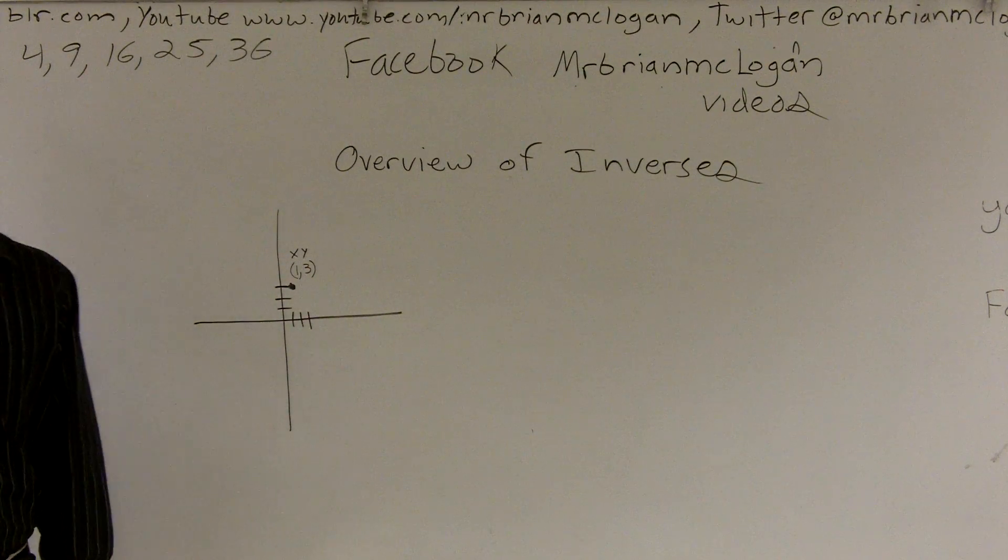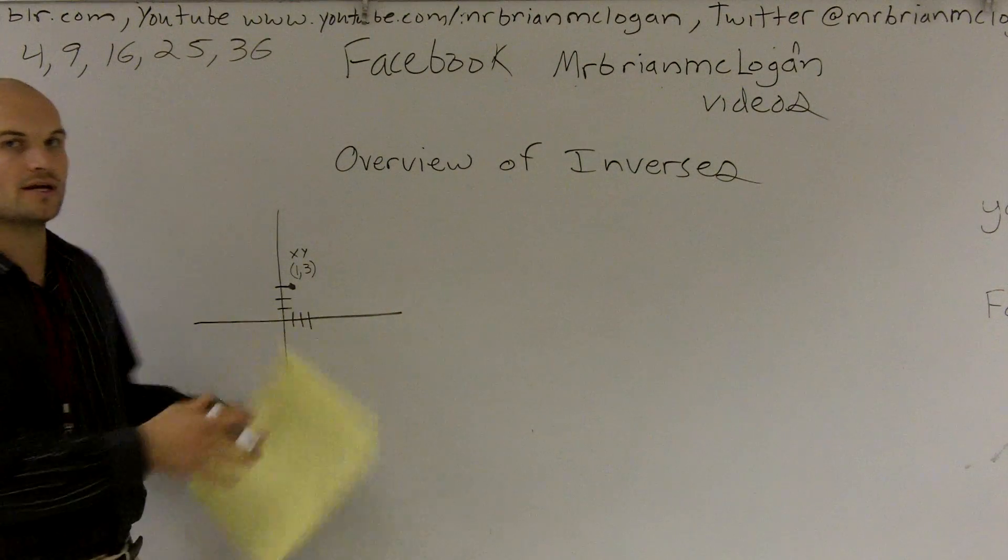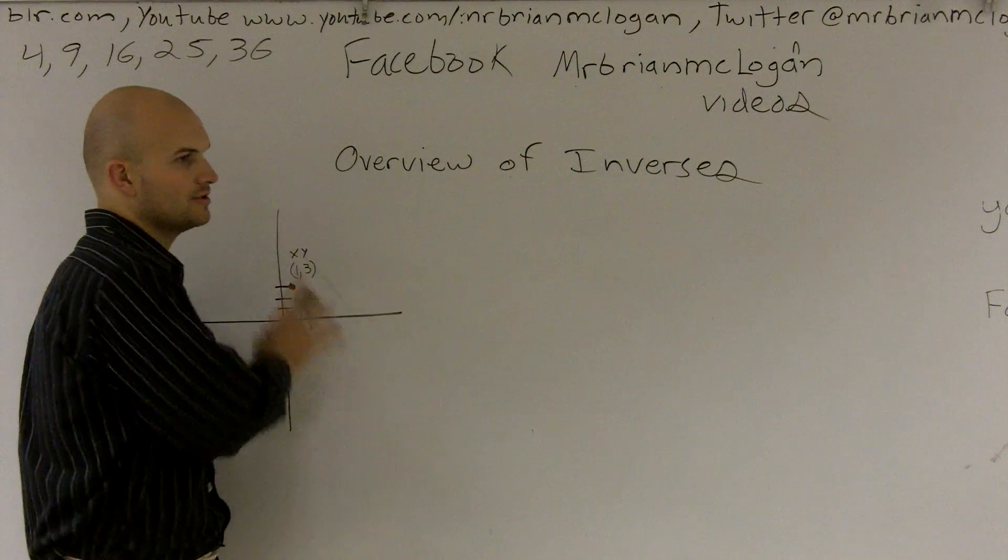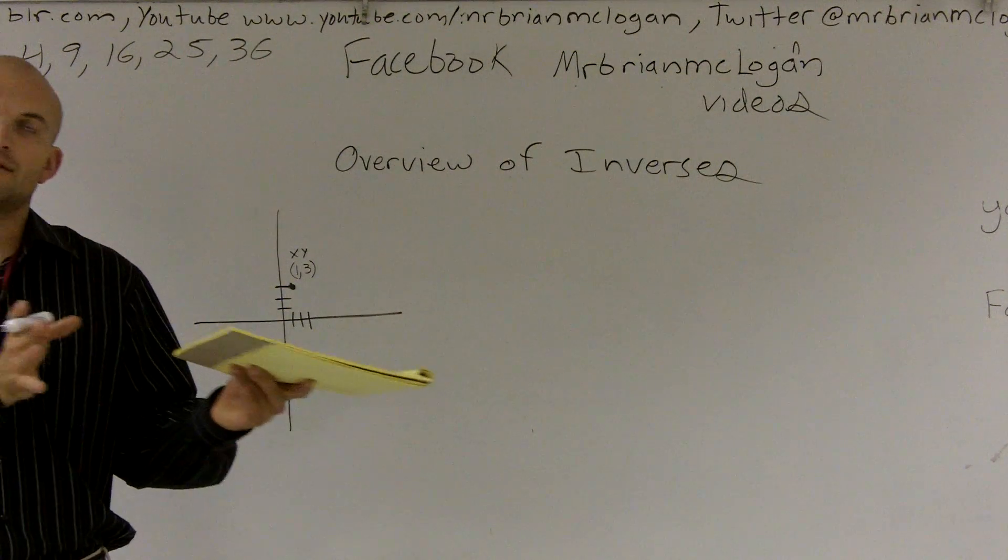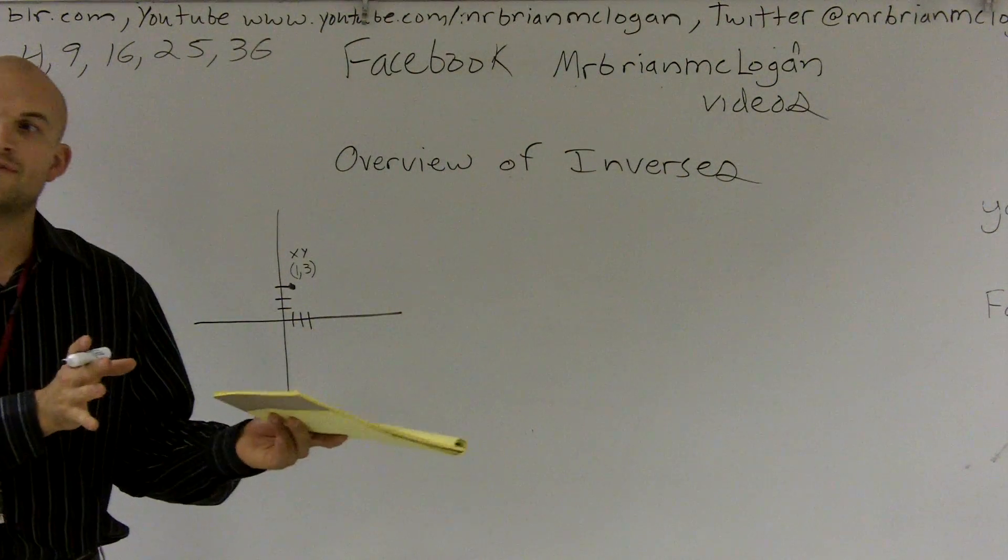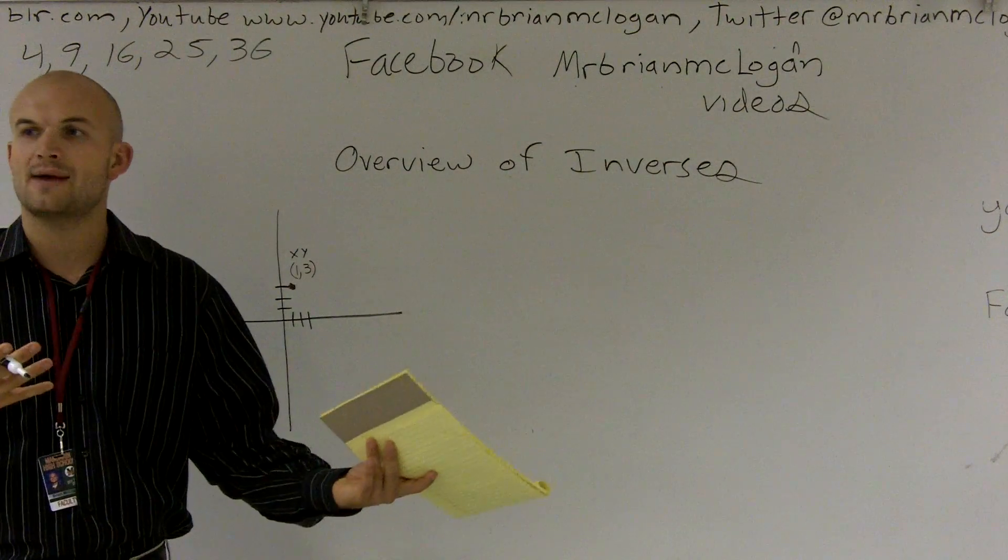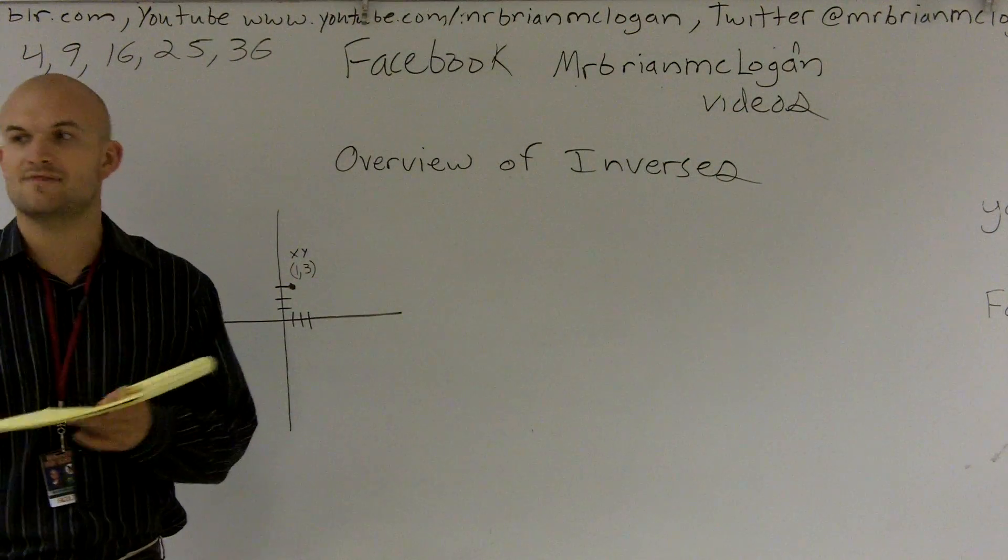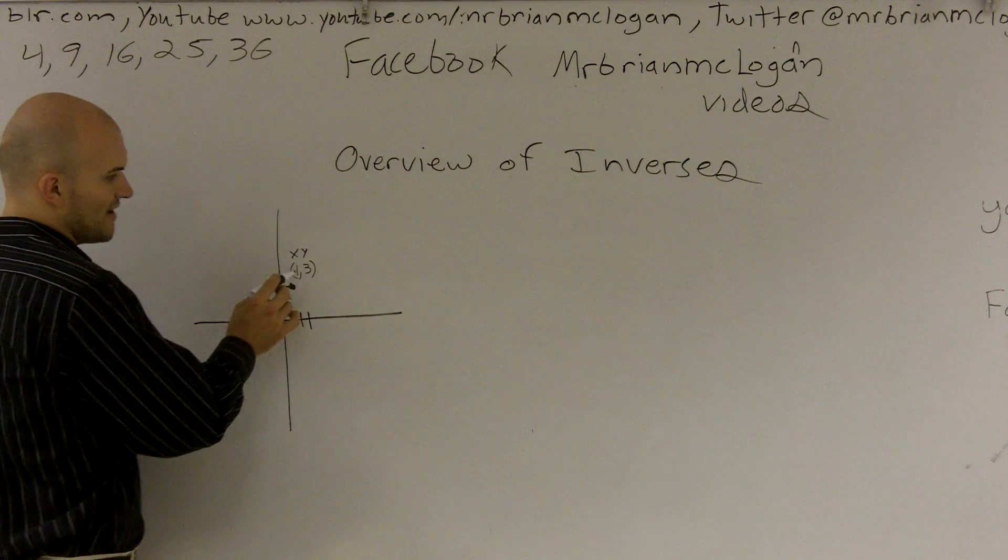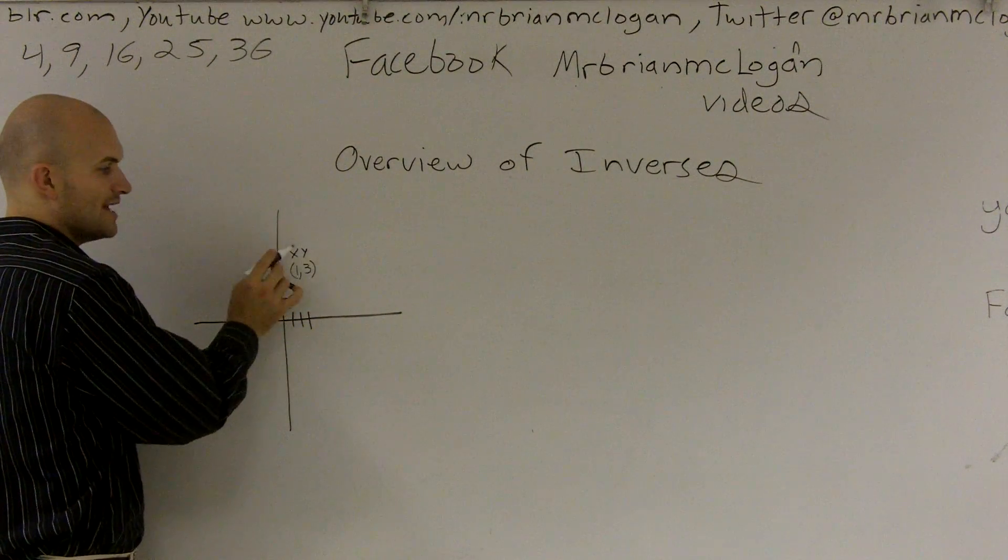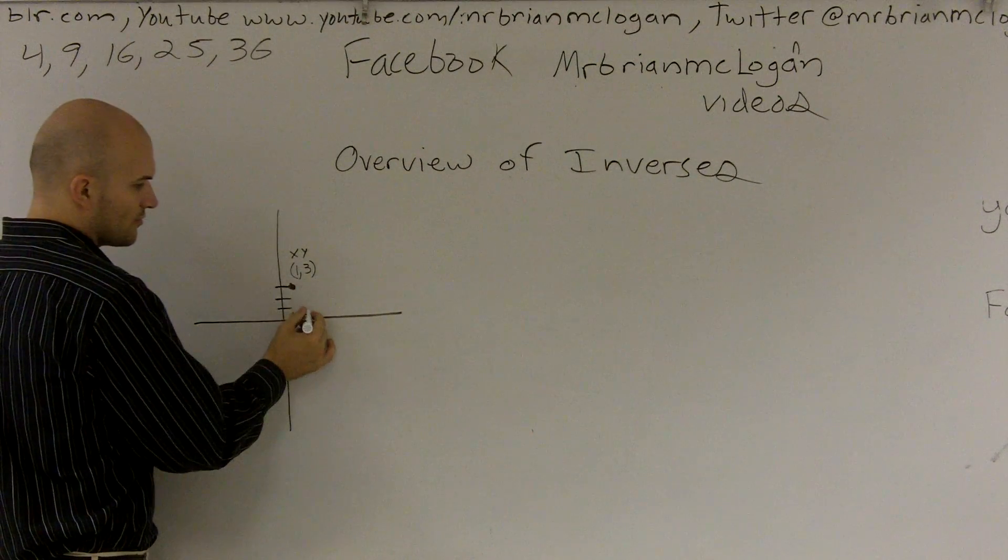What the inverse is actually talking about is if I was going to give you an inverse function, the domain of a function is equal to the range of its inverse. So what's really happening when you're talking about a function and its inverse is your domain and ranges are actually switched. So if I was going to switch the domain and range of this coordinate point, it would now become 3 comma 1.